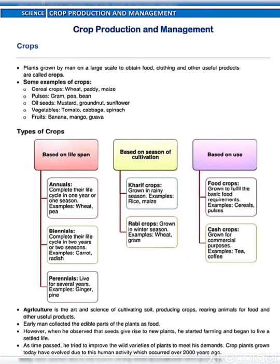Crop Production and Management. First of all we will talk about crops. Plants grown by men on a large scale to obtain food, clothing and other useful products are called crops. Here there are some examples of crops, like cereal crops, pulses, oilseeds, vegetables and fruits.